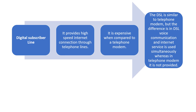The next type of modem is the digital subscriber line (DSL). This provides a high-speed internet connection through telephone lines. It is more expensive when compared to a telephone modem. It is similar to a telephone modem, but the difference is that voice communication and internet service can be used simultaneously, whereas with a telephone modem, if voice communication is in use, the internet service cannot be used at the same time.